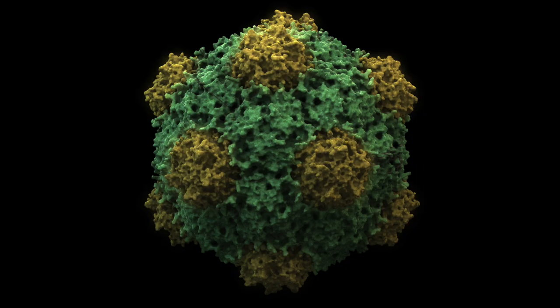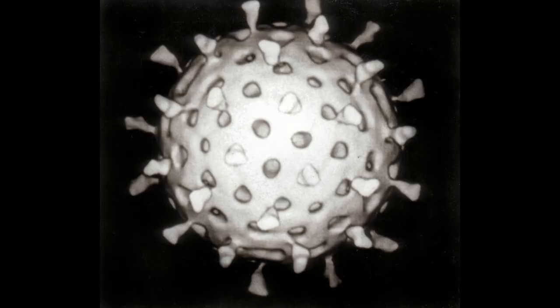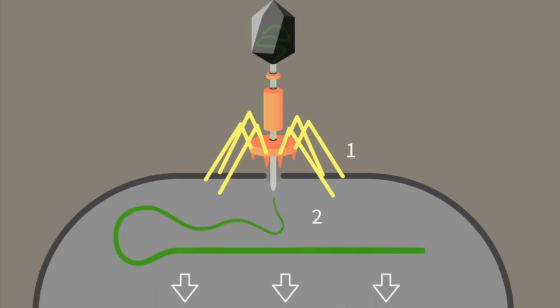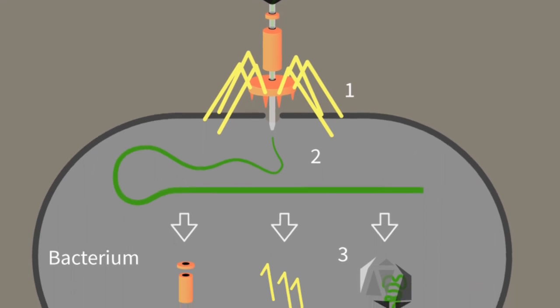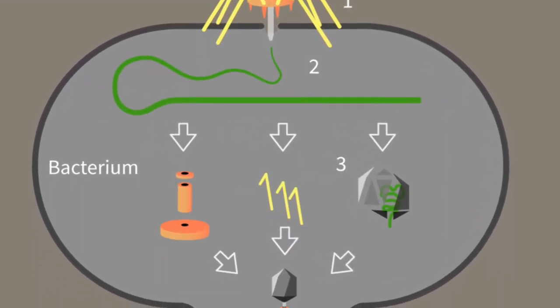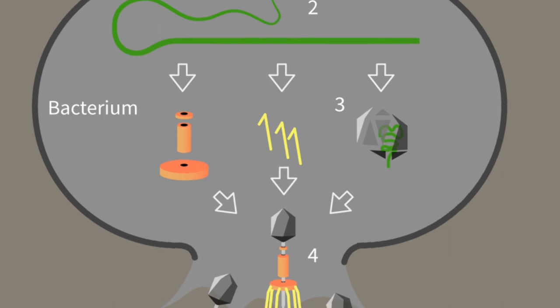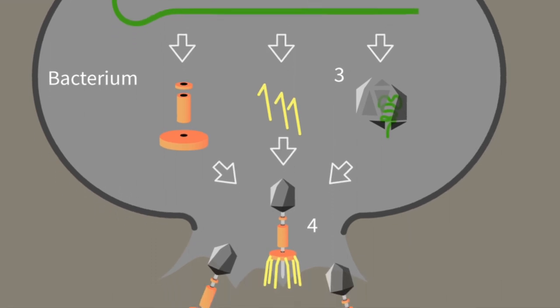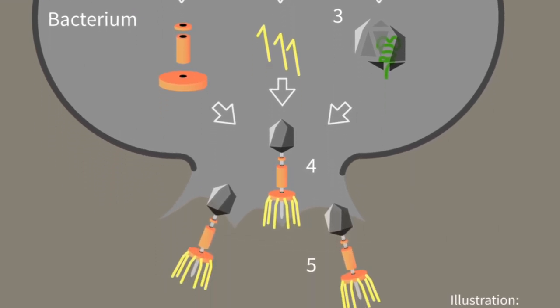Most human-infecting viruses are polyhedral or spherical in shape and enter the cells in their entirety. By contrast, many bacteria-infecting viruses, or bacteriophages, have these rather menacing-looking, robot-like shells that attach to the exterior of the bacterium and inject their genetic material. Whether or not viruses are themselves living things is a matter of debate, given that they can only replicate inside of other living beings.